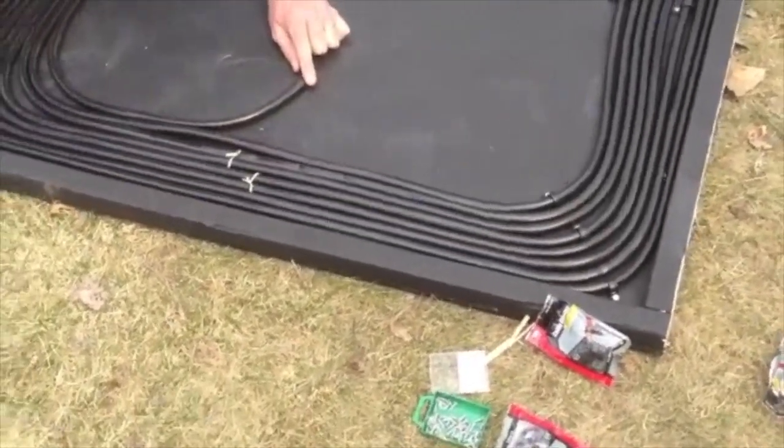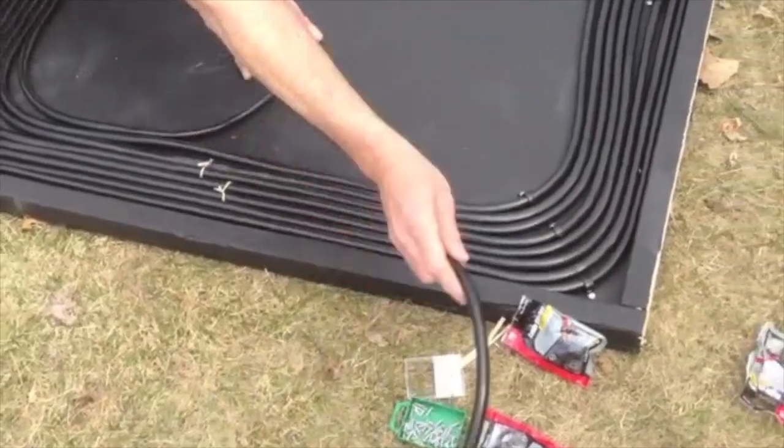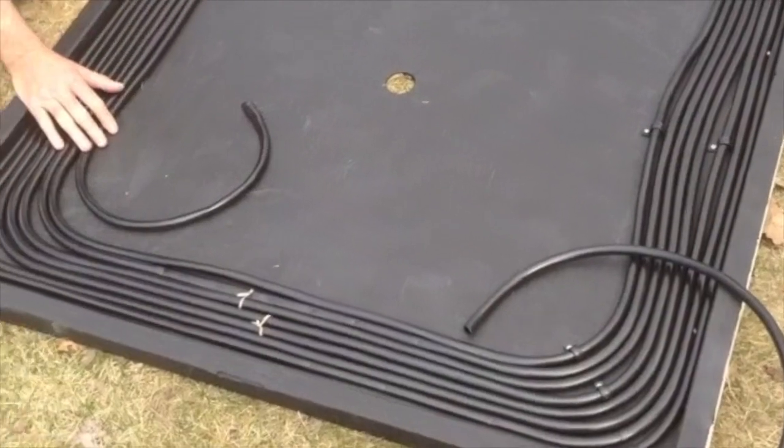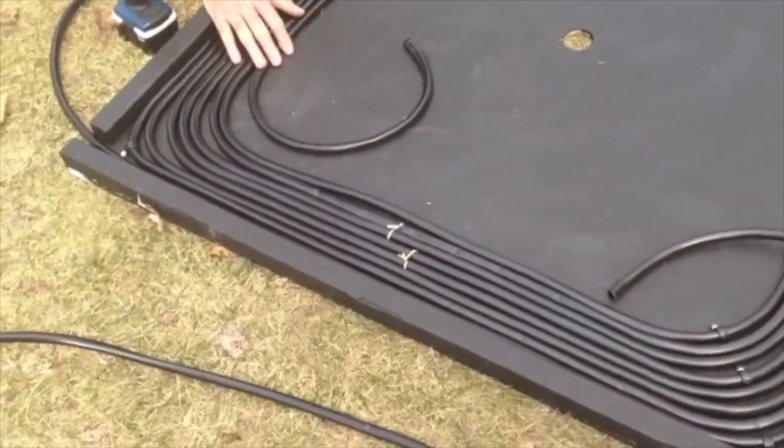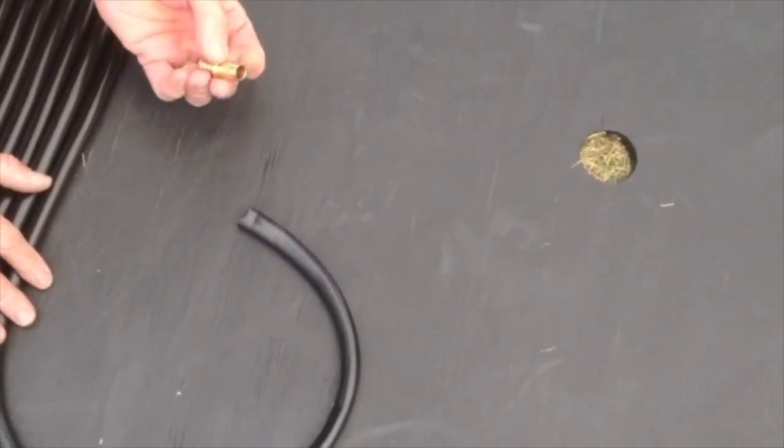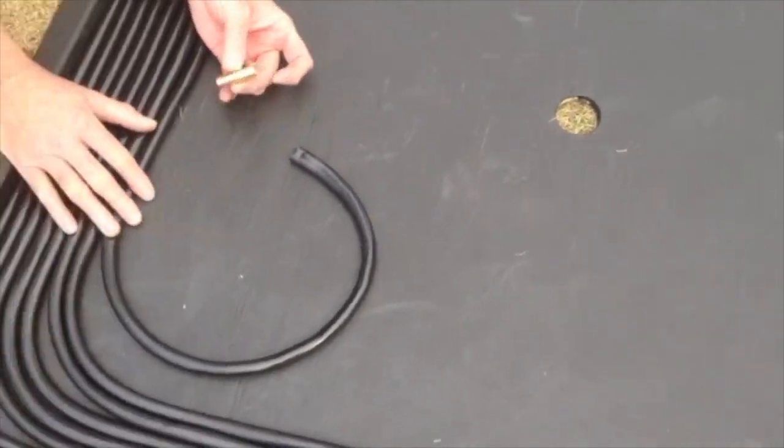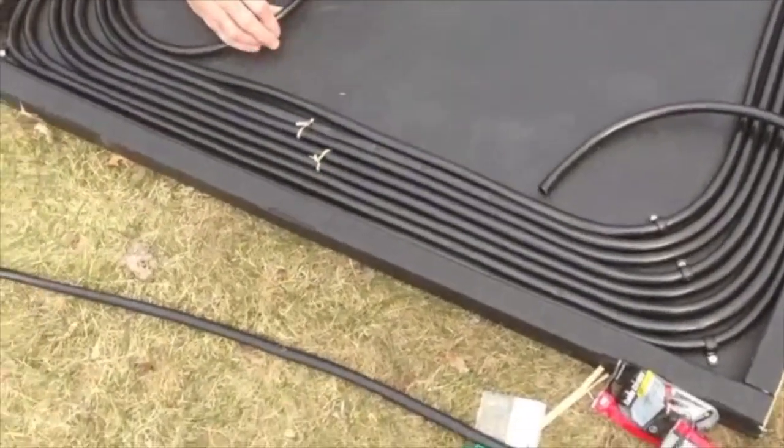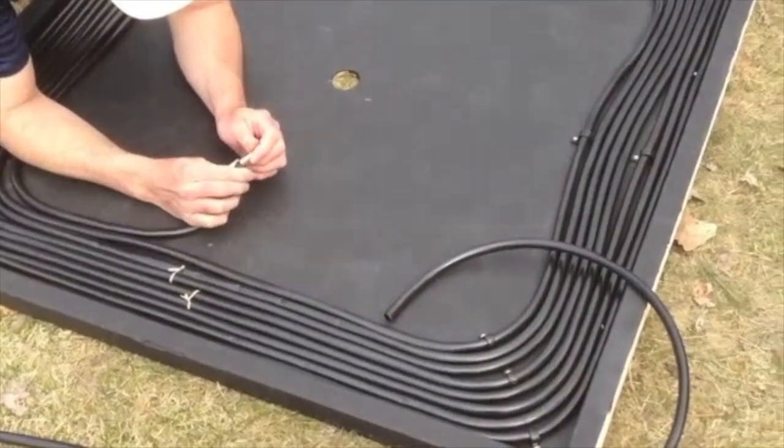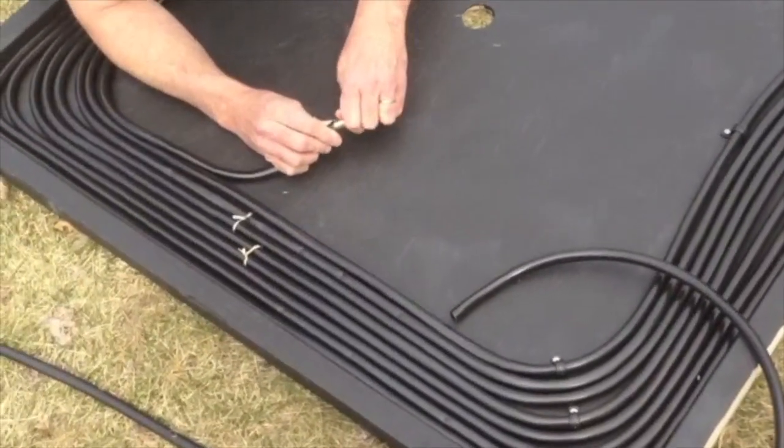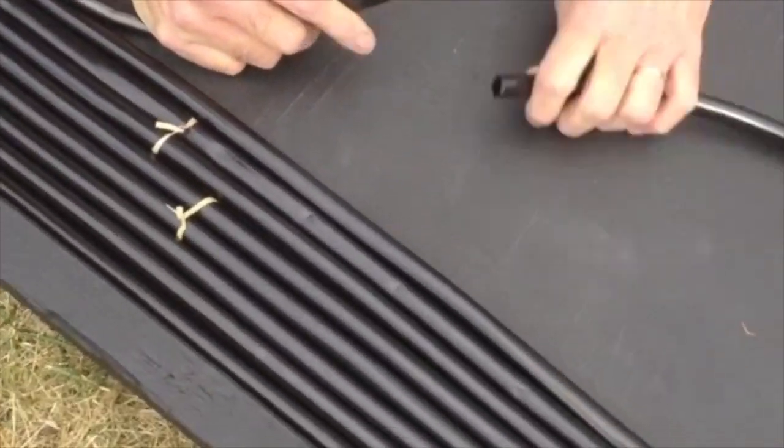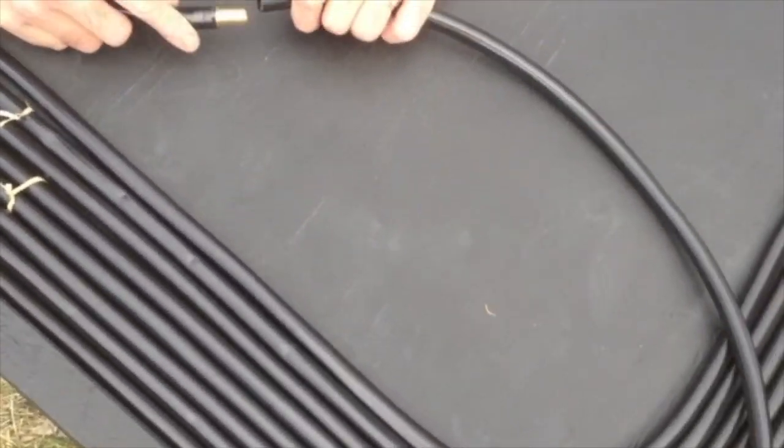So we did the first 100 feet of this tubing and basically this is how much it's covering. So now we're going to connect the second 100 feet of tubing using this brass connector. Ideally, if you can find 200 feet of this tubing all together, that's great. For something this size, that's what you need. Otherwise, you have to use this connector.